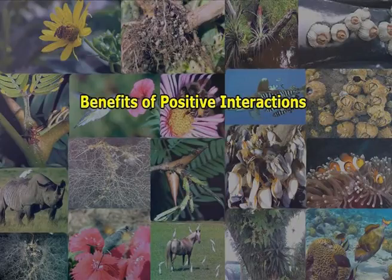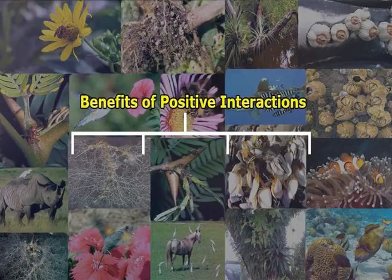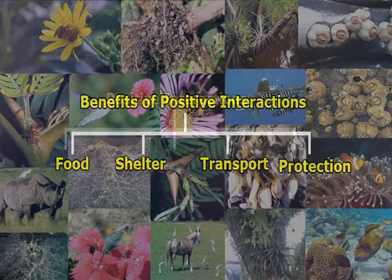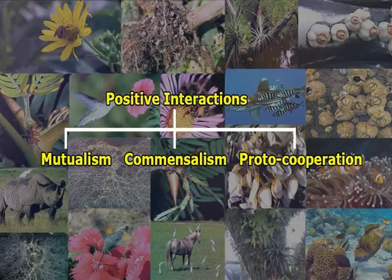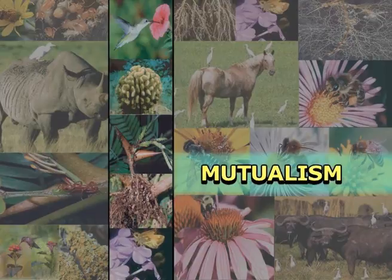In positive interactions, either one or both species are benefited. This benefit may be in respect of obtaining food, shelter, transport or protection. These include mutualism, commensalism and proto-cooperation. In this particular lecture, we will mainly focus on different aspects of mutualism and commensalism.